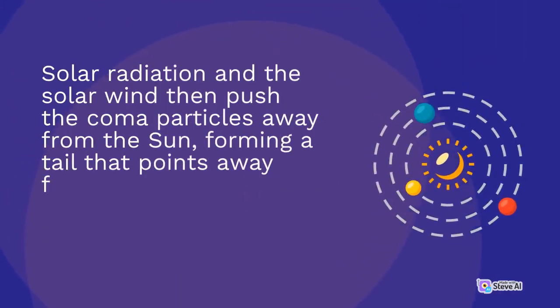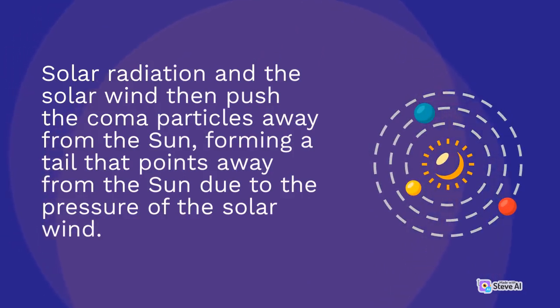Solar radiation and the solar wind then push the coma particles away from the Sun, forming a tail that points away from the Sun due to the pressure of the solar wind.